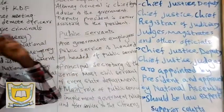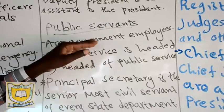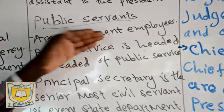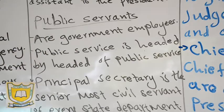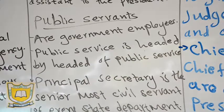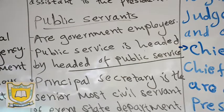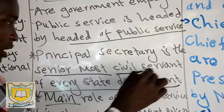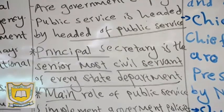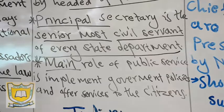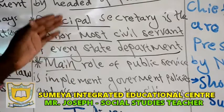Now let us look at what we call public servants and the public service. Public servants are government employees — talk about the DO, the DC, the chief and assistant chiefs. All those people are government employees and other members who work for the government. The public service is headed by the head of public service. Then we have the principal secretary, who is the senior-most civil servant in every state department. In every state department we have the principal secretary, who is the senior-most servant there.